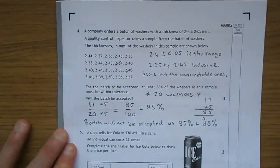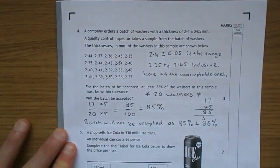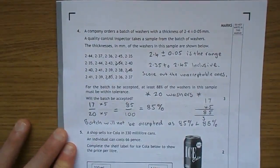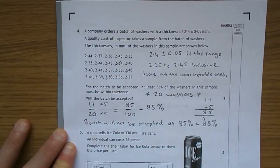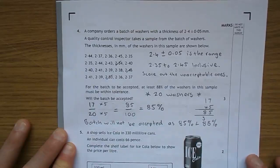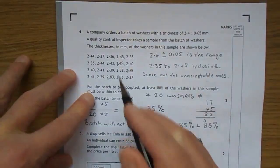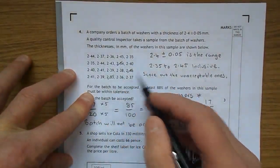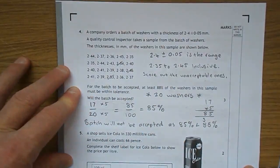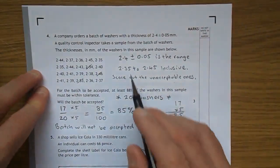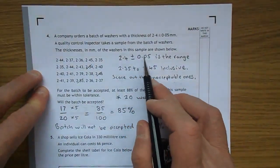Quick look at number 4, here we go. A company orders a batch of washers with a thickness of 2.4 plus or minus 0.05 millimetres. A quality control inspector takes a sample from the batch of washers. The thicknesses in millimetres of the washers in this sample are shown below, so there we have it there. 20 numbers there. Let's have a quick check, what is 2.4 plus or minus 0.05?